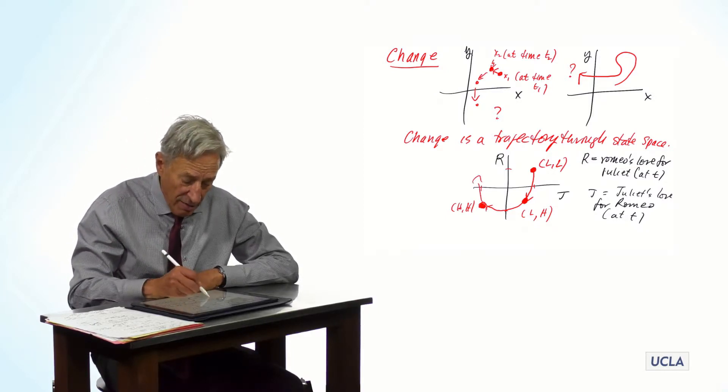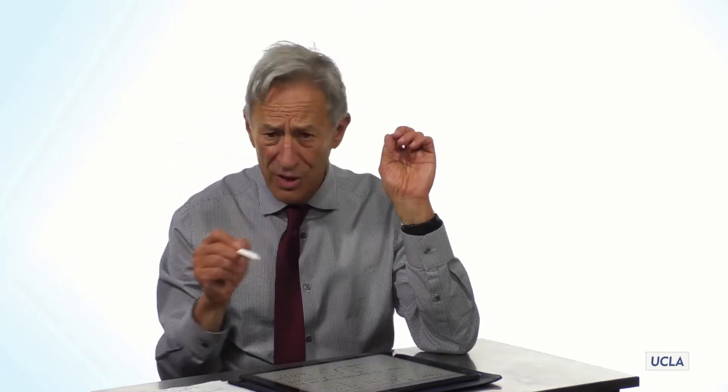Where does it go from there? No idea. It depends on the details, on the model, on the dynamics of the interrelation between these couples. So this is just a simple example of the idea that change is a trajectory through state space. Now, right away, the minute that we say change is a trajectory through state space, all kinds of interesting questions can be asked that you might not think to ask in another representation, which is, what is the shape of the trajectory? Where is it going? What does the shape of the trajectory tell us about the interactions between Romeo and Juliet?